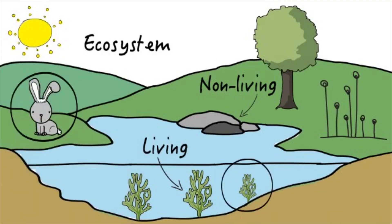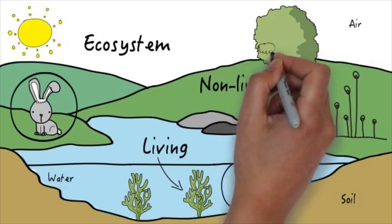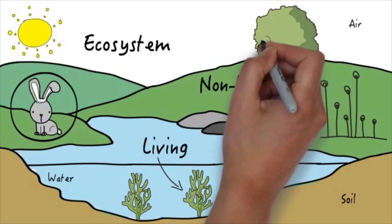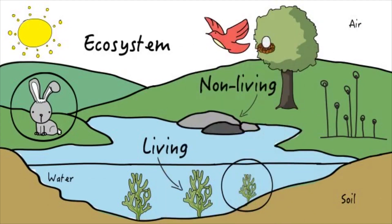Plants and animals form the living parts of an ecosystem. The non-living parts are the air, soil, and water. Some animals may live in the same ecosystem but not in the exact same place. For example, birds live on trees, snails live between plants, and fish live in water. Each of these animals has their own habitat.